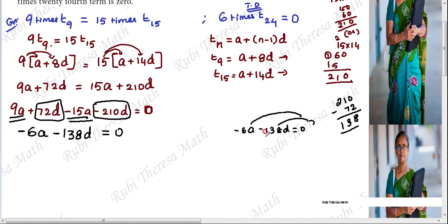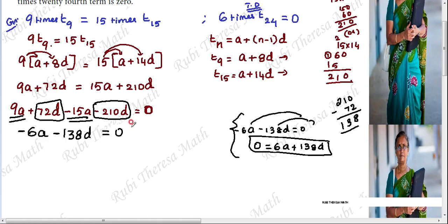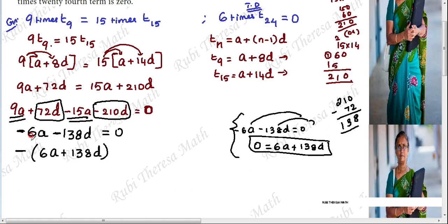We take minus 1 as common from the left-hand side. Taking minus 1 outside gives us minus 1 into (6a plus 138d) equals 0. Since minus 1 is the common value, the expression inside becomes 6a plus 138d equals 0.